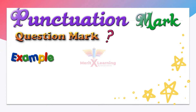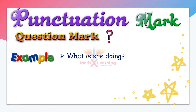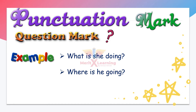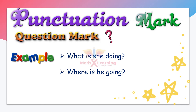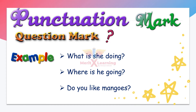Let us see a few examples. Number one: 'What is she doing?' This is a question, so question mark at the end. Number two: 'Where is he going?' Again, this is a question, so question mark at the end. Number three: 'Do you like mangoes?' We are asking a question, so again, question mark at the end.